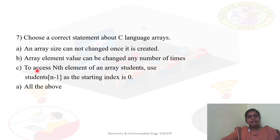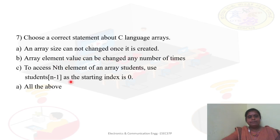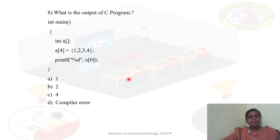Choose a correct statement about C language arrays. An array size cannot be changed once created or initialized during declaration — yes, this is correct. Array element values can be changed — yes, the element value can be changed any number of times. To access the nth element of an array named students, we use index n minus 1, because the index starts from zero — this statement is also correct. So all statements are correct.